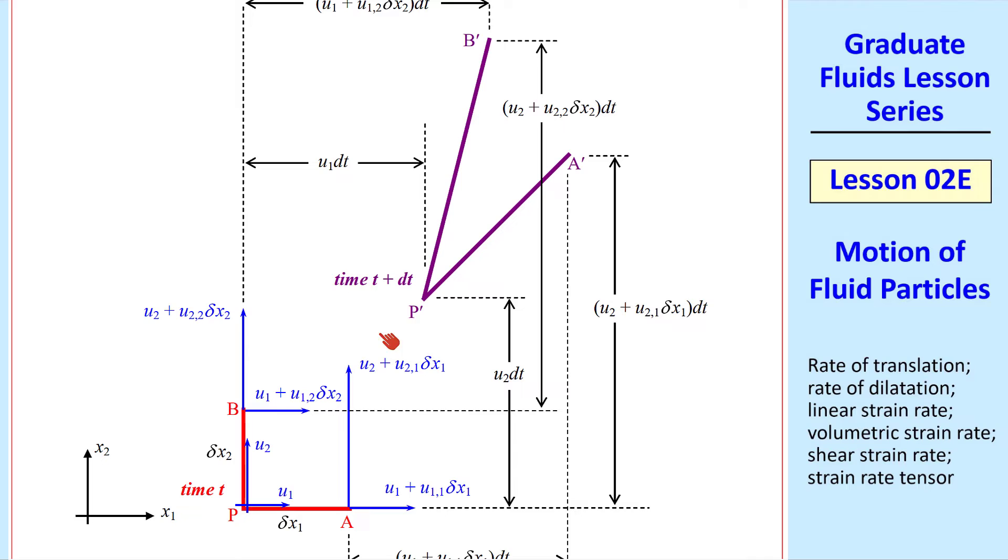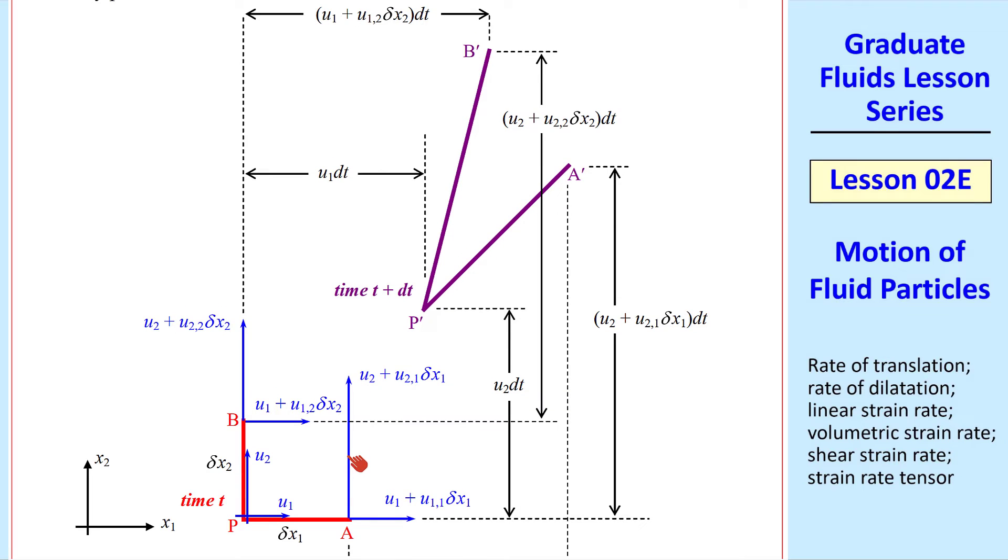At time t plus dt, point P has moved to P prime, point A has moved to A prime, and point B has moved to B prime. Again, we use Taylor series expansions and we truncate to first order.